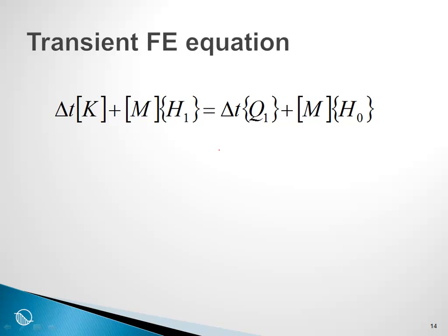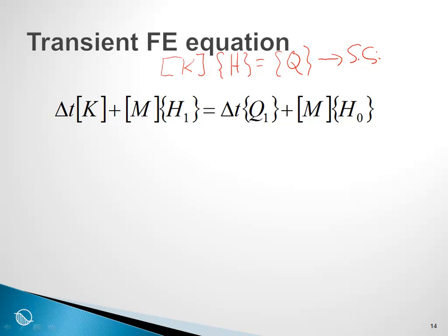Now let us look at the transient finite element equation, which has a few more terms than what we had under steady state conditions. Under steady state, we had a simple equation: K times the unknown heads at the nodes equals a flow or forcing vector. For transient analysis we have additional terms. First, we have to specify a time step — you as the user are required to define a time step and a time-stepping sequence, since we are integrating with respect to time.